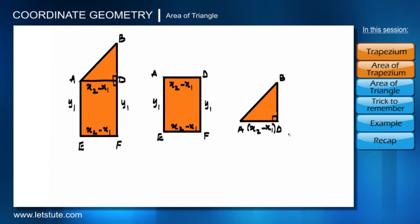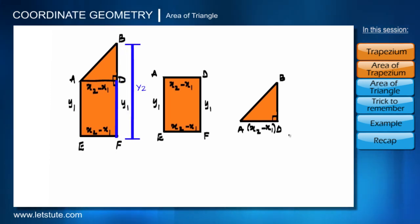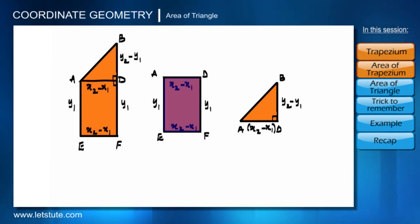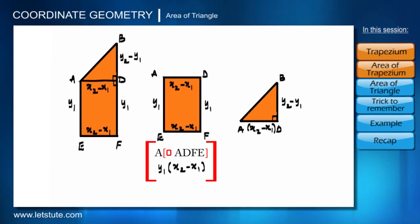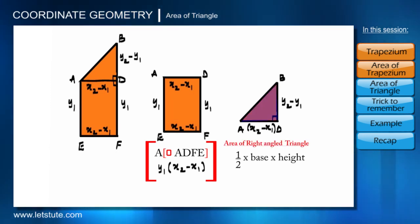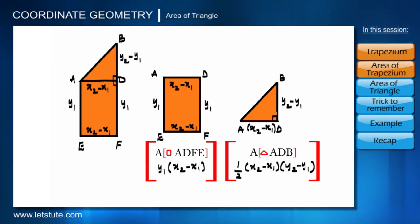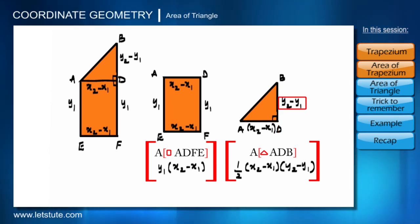To find length BD, we subtract length DF (which is y1) from length BF (which is y2), so BD is y2 minus y1. Area of the rectangle is length times breadth, giving y1 times (x2 minus x1). Area of the right-angle triangle is half times base times height, giving half times (x2 minus x1) times (y2 minus y1), where x2 minus x1 is the base and y2 minus y1 is the height.